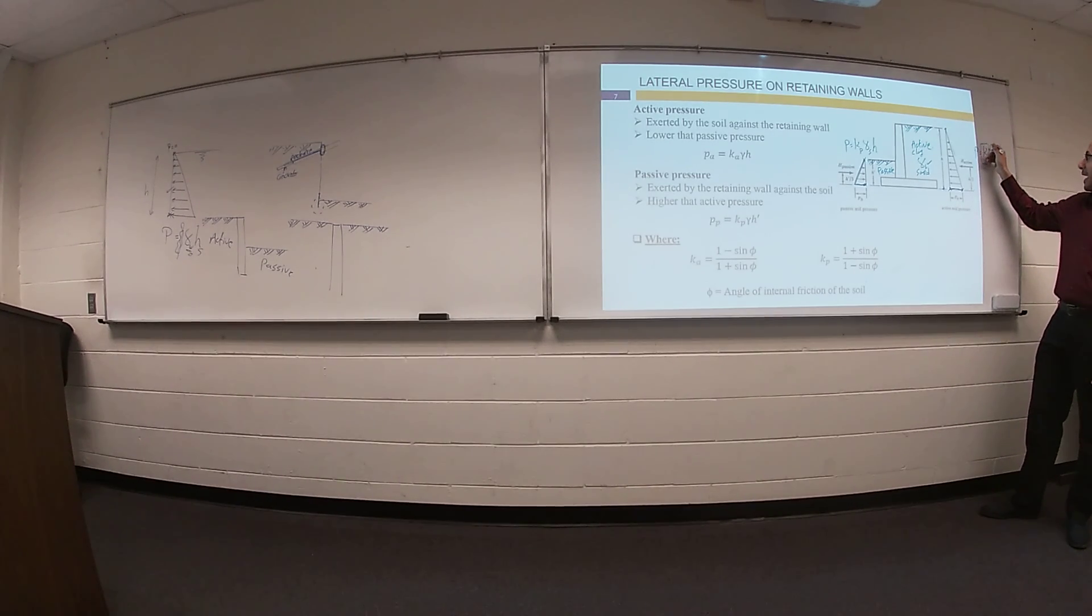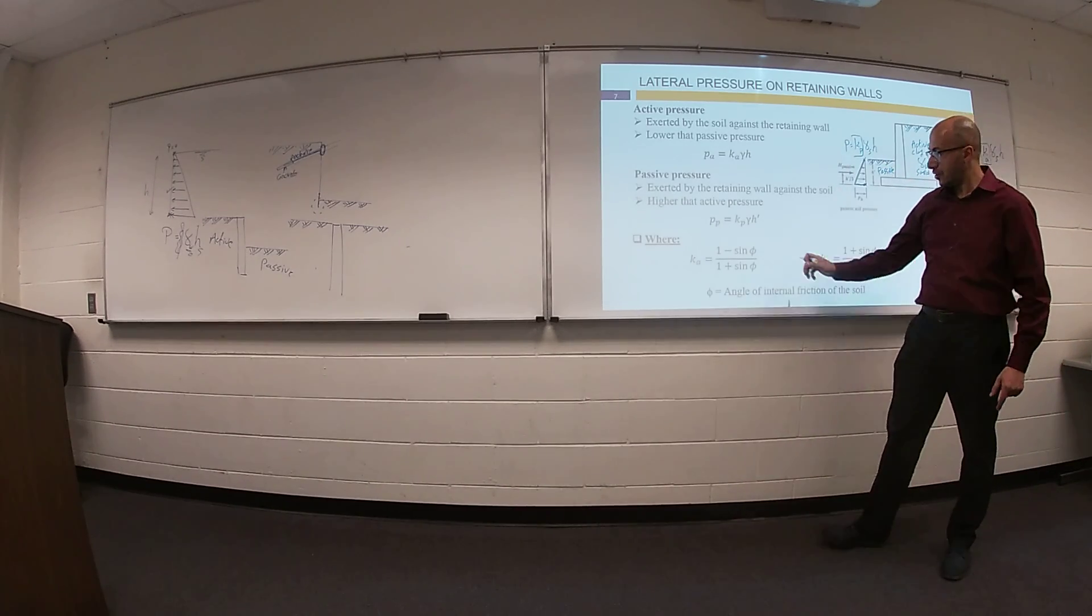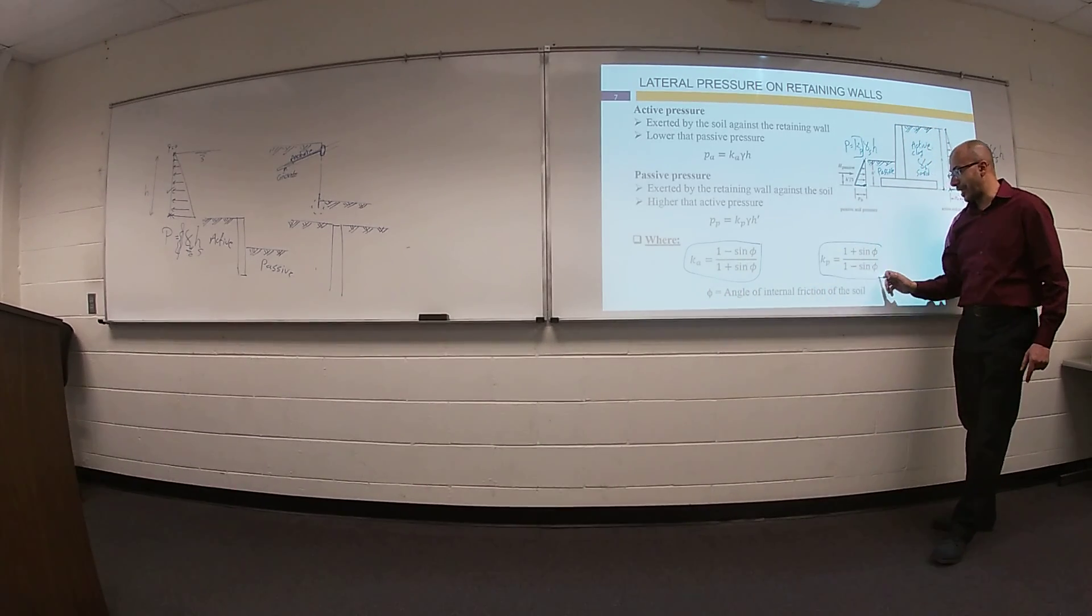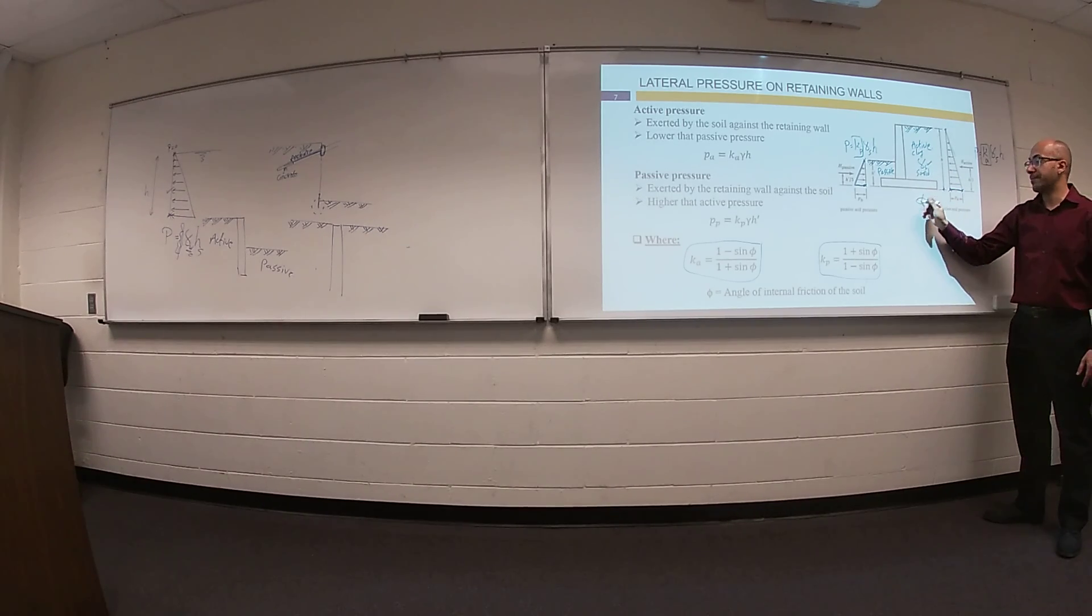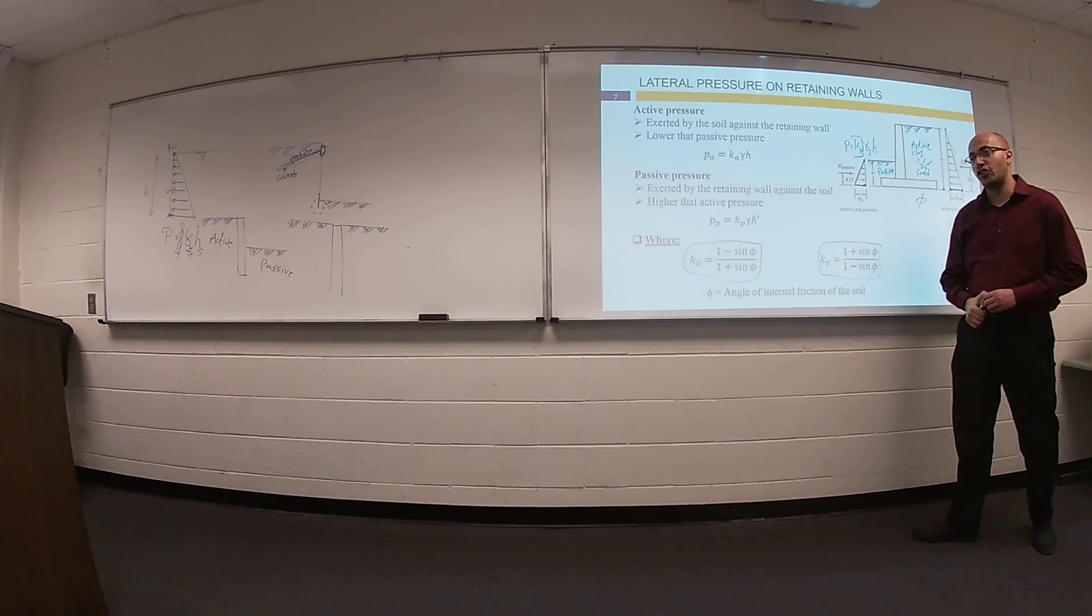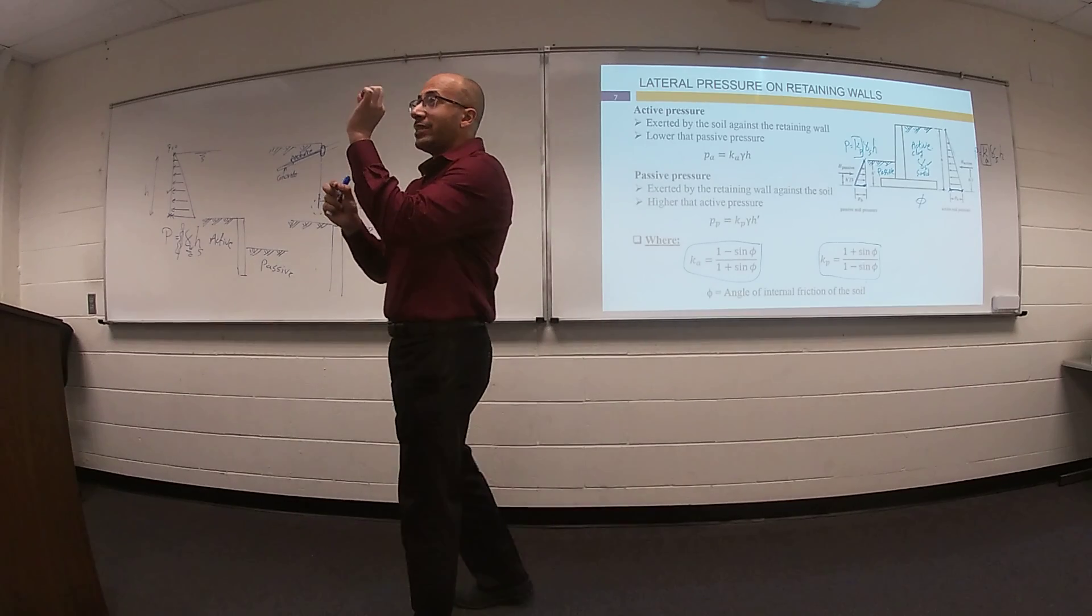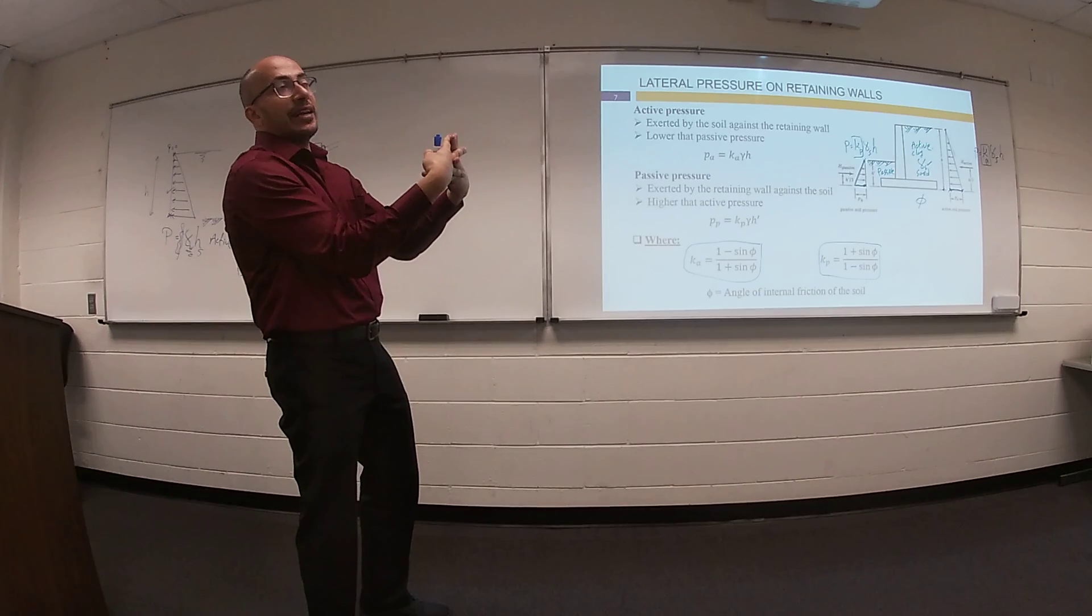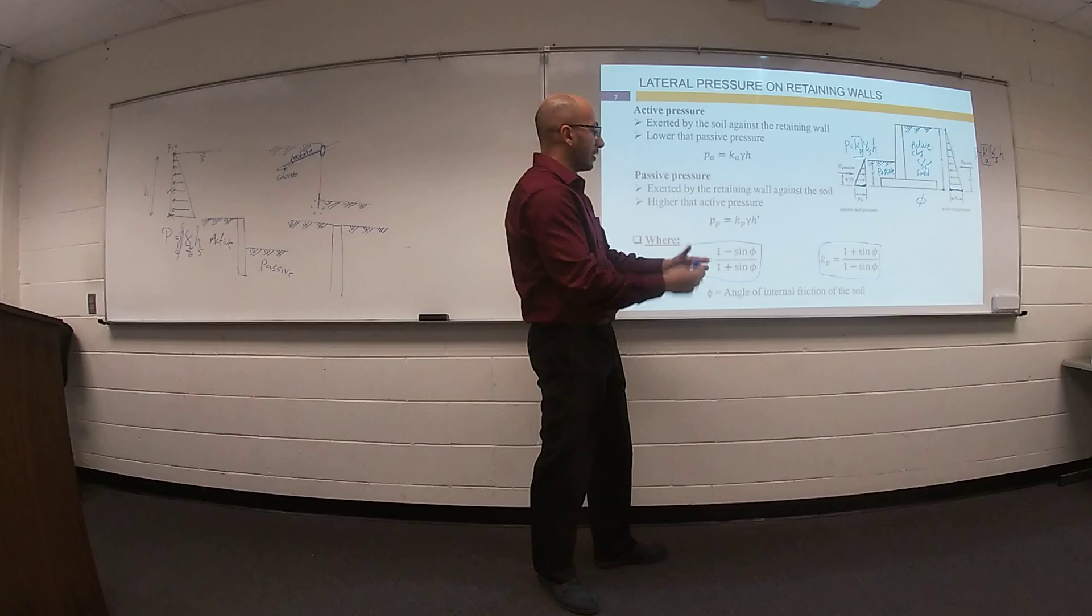But wait, what is the value of K active? What is the value of K passive? We have two expressions for K active and another one for K passive. For each type of soil, we have something called phi, which is called angle of internal friction of the soil. If you have sand, sand consists of particles. These particles between each other make a friction. We have something called angle of internal friction between these particles, which is called phi.